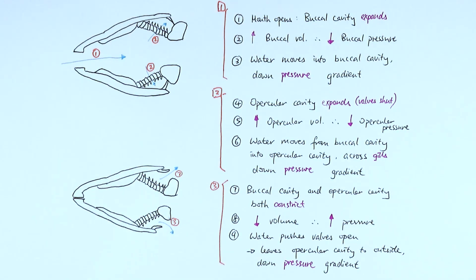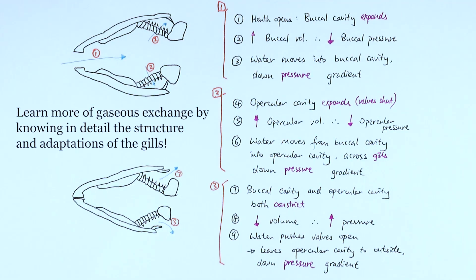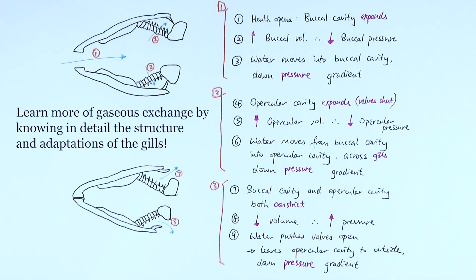And this is the breathing mechanism in bony fish. If you want to know more about the gas exchange system, you'll need to look at the structure of the gills — how the gills are stacked in the gill plates, the filaments and lamellae, the capillaries, and also the counter-current system, which we can cover in another video.